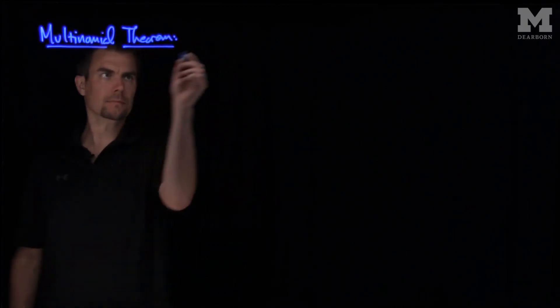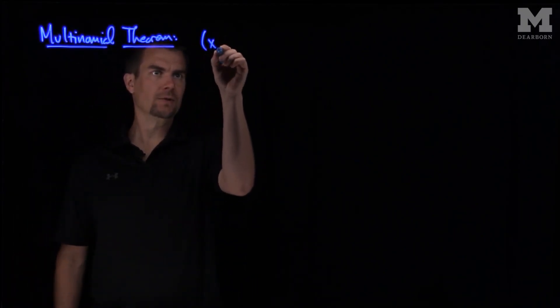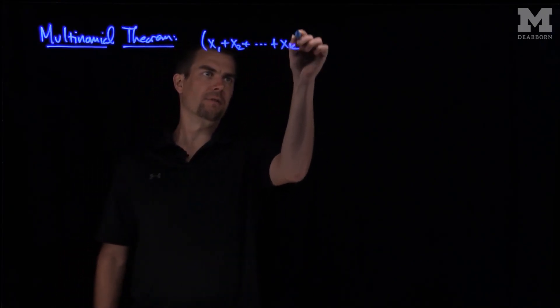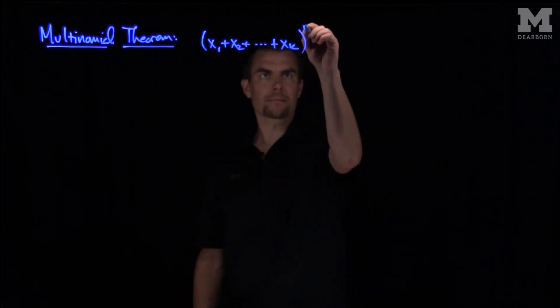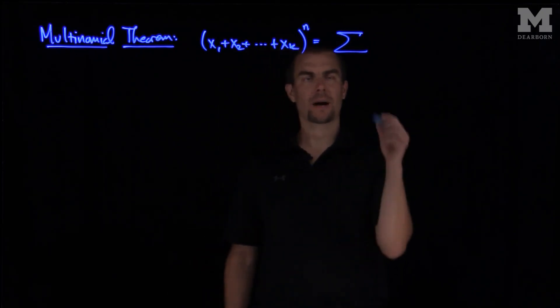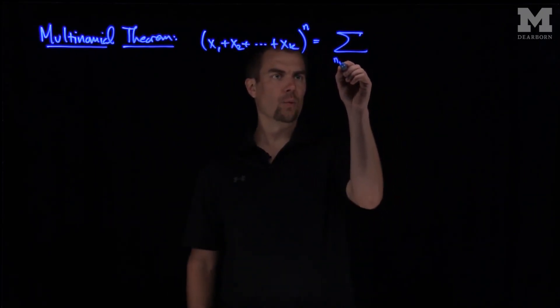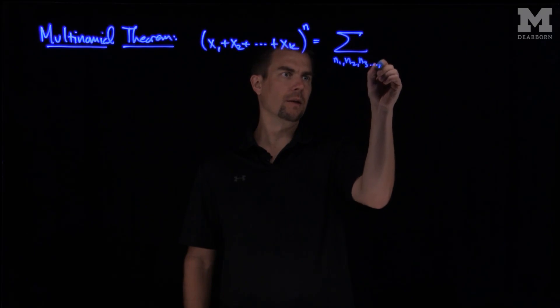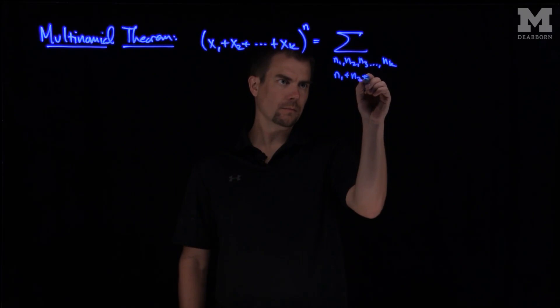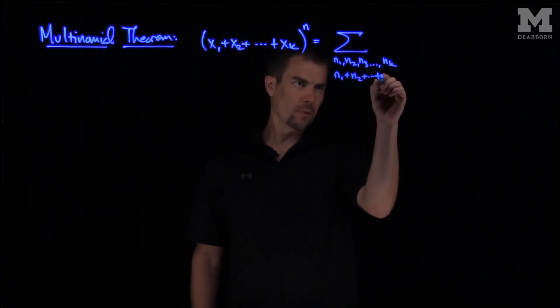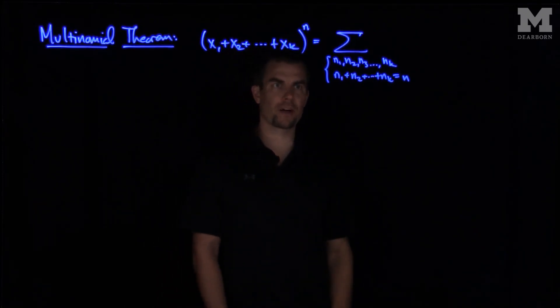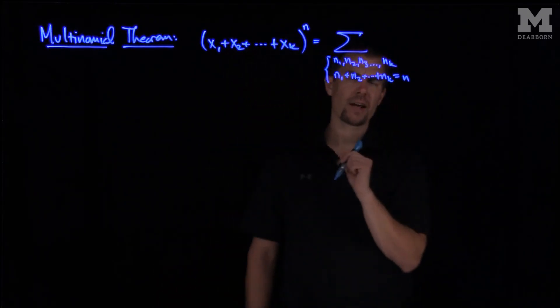The Multinomial Theorem states that x₁ plus x₂ plus xₖ, the sum of k real numbers, to the power of n, is the sum over all combinations of n₁, n₂, n₃, through nₖ. We sum over all possibilities with the only constraint that n₁ plus n₂ plus nₖ is equal to n.